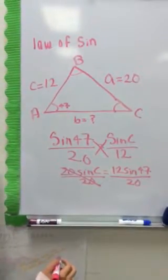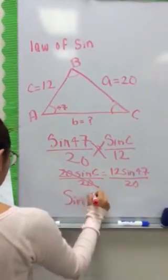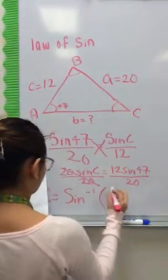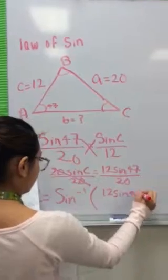Finding the angle, you will use the inverse of sine. Your new formula will be C equals sine inverse, parentheses 12 sin 47 over 20.